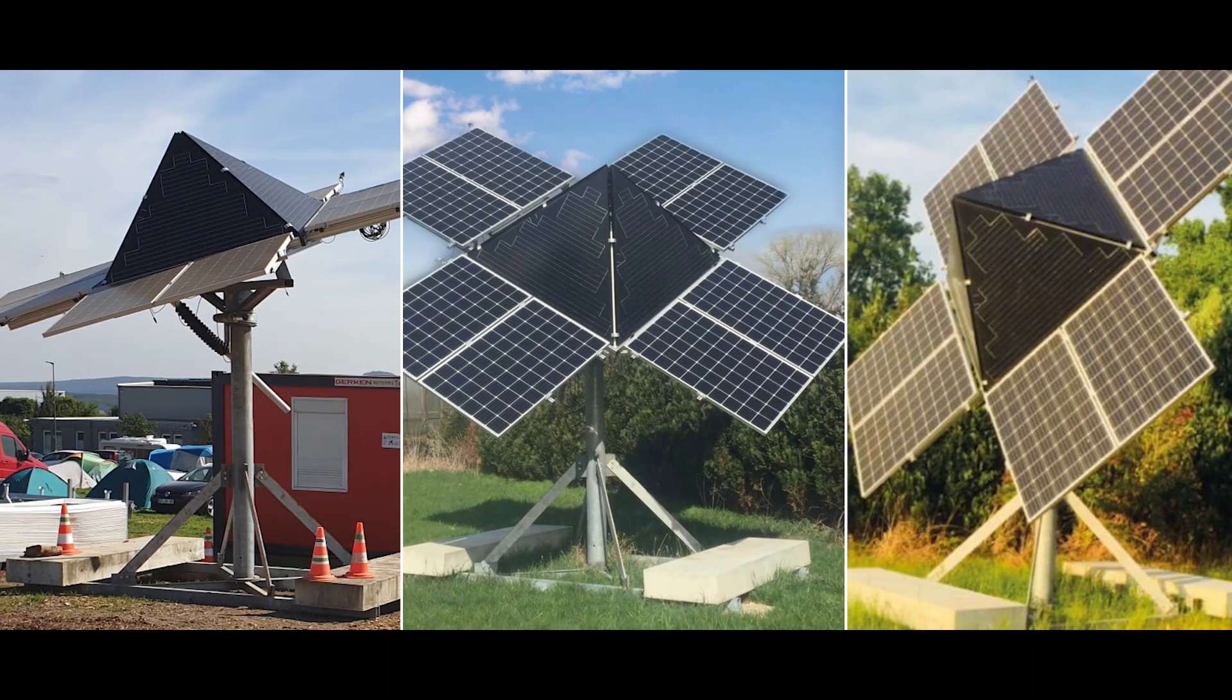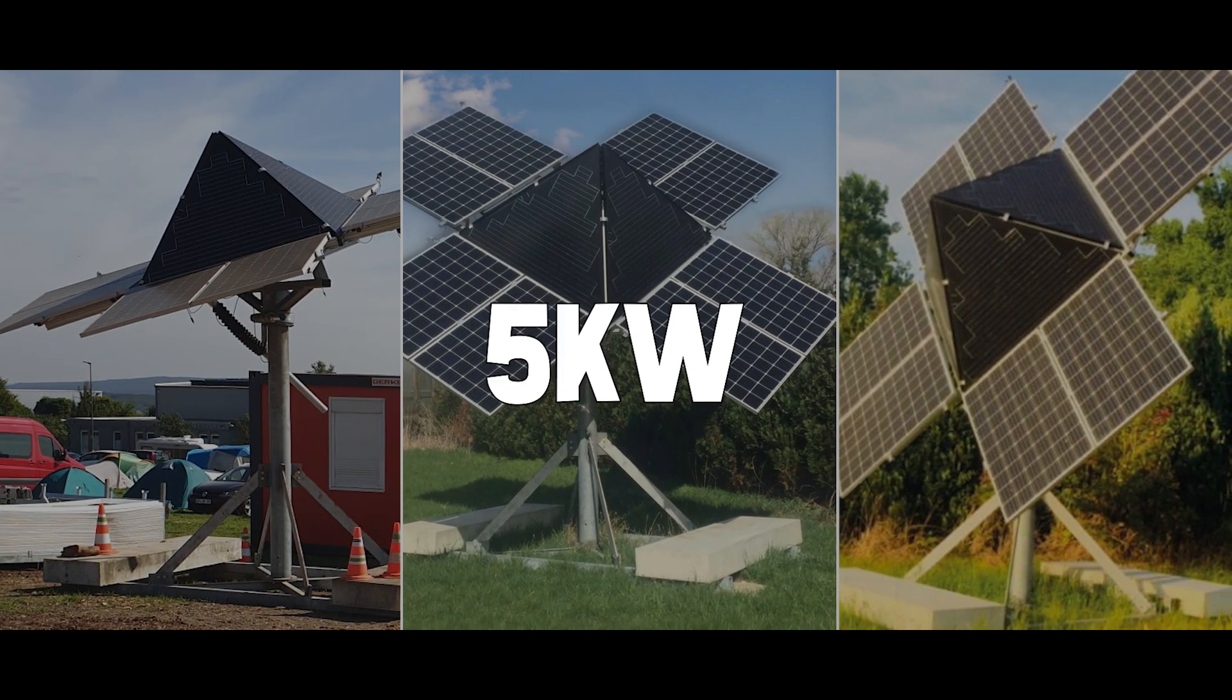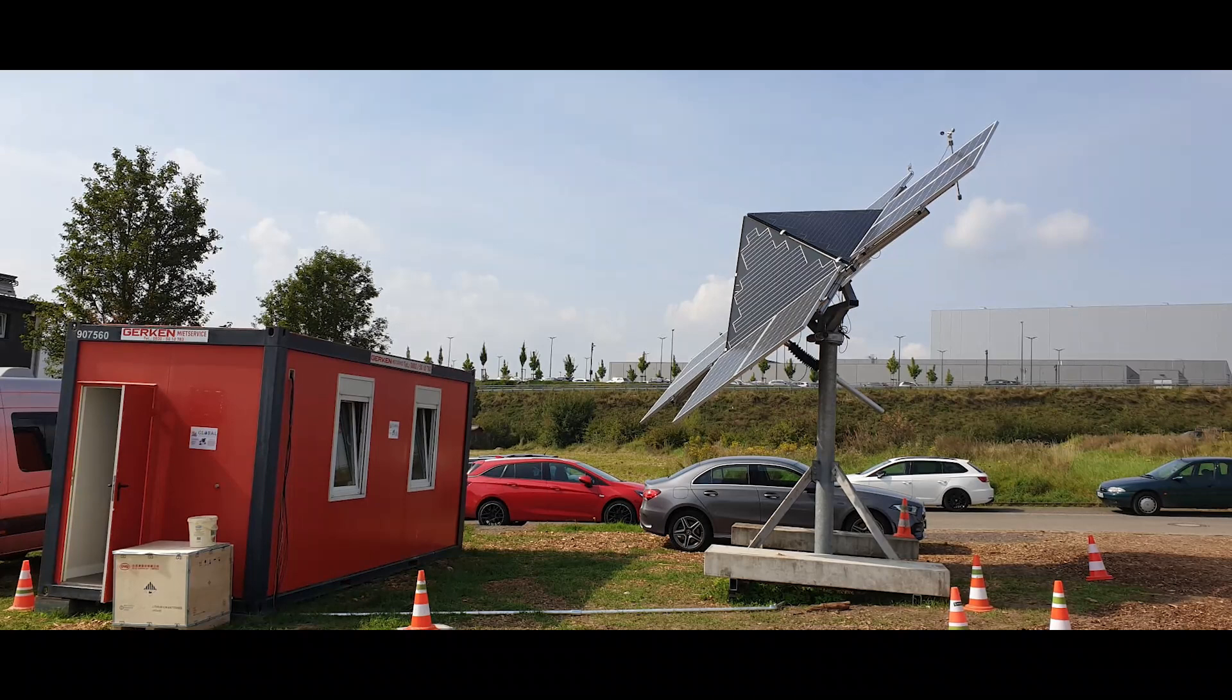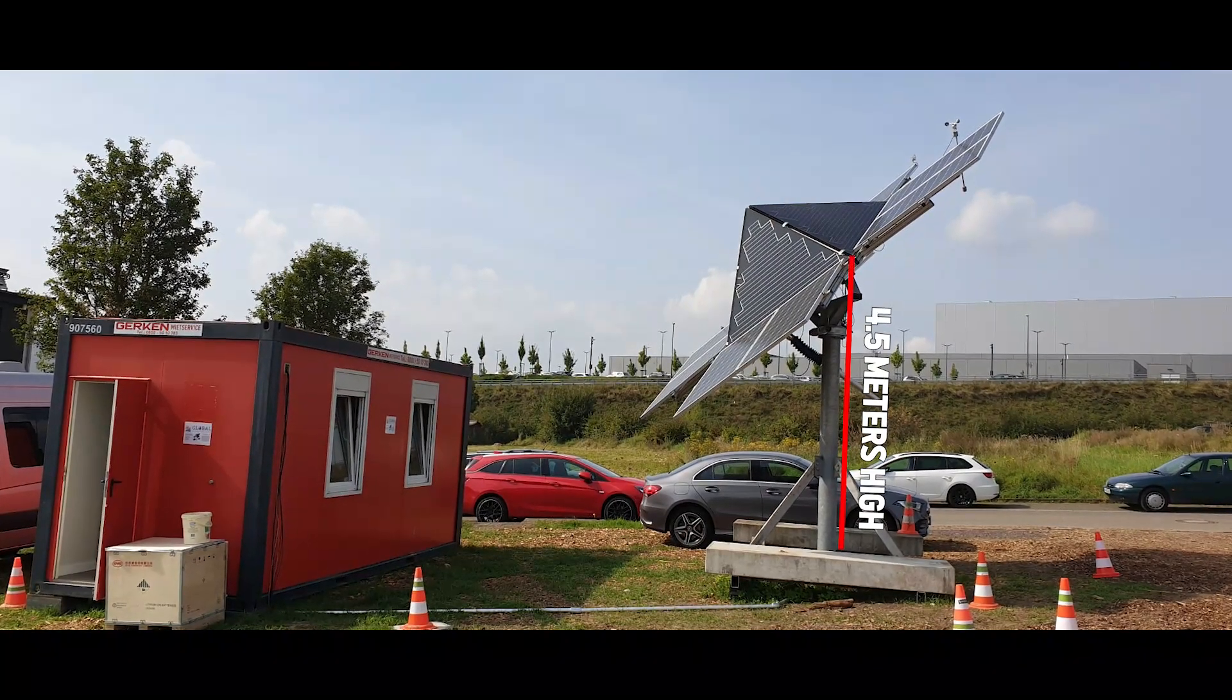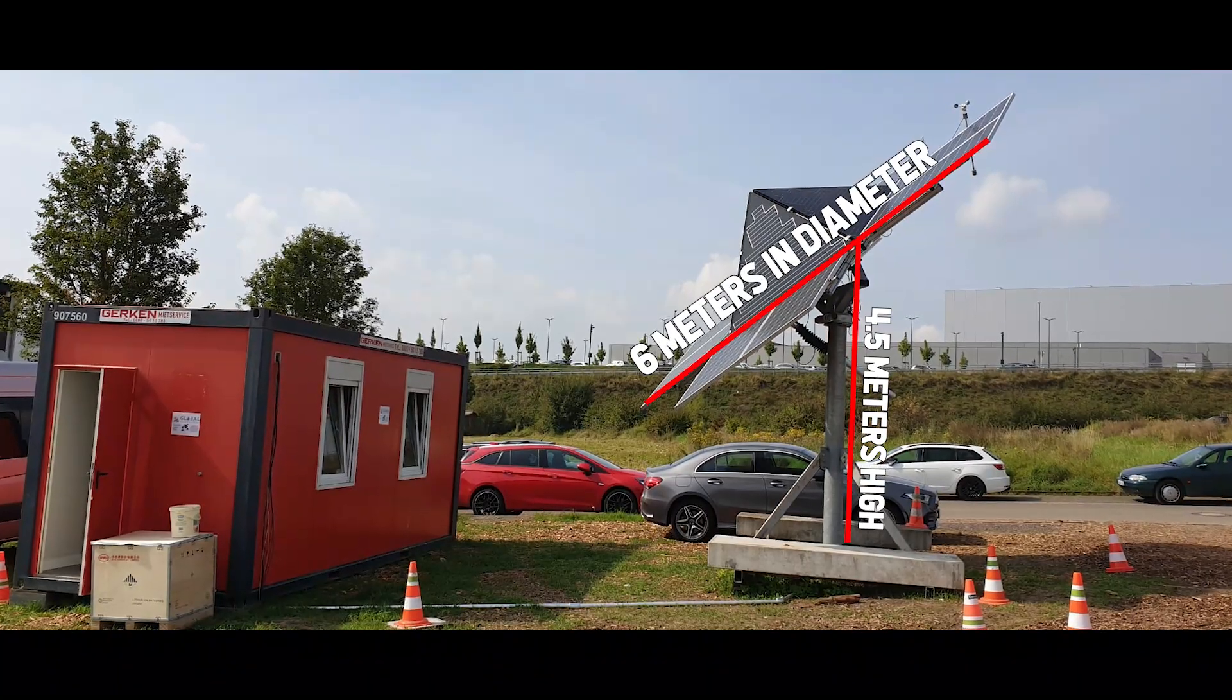The system is available in three different sizes: 4 kilowatt, 5 kilowatt, and 7 kilowatt. On average, the system stands about 4.5 meters high and has a solar surface area of almost 6 meters in diameter.